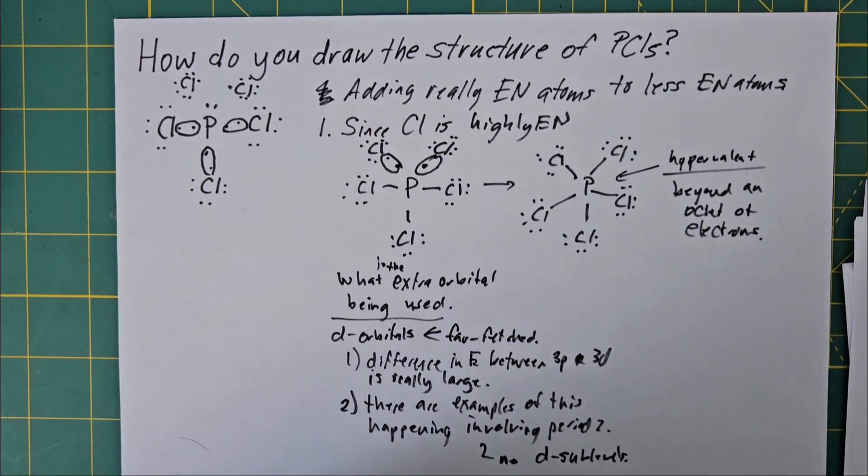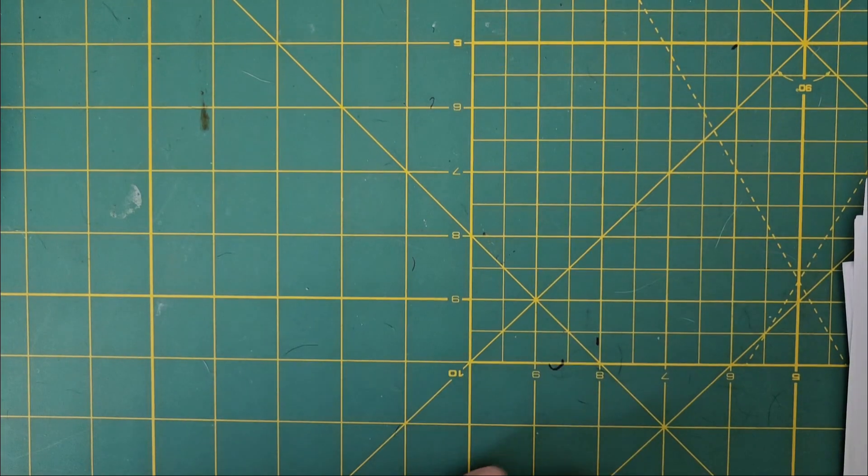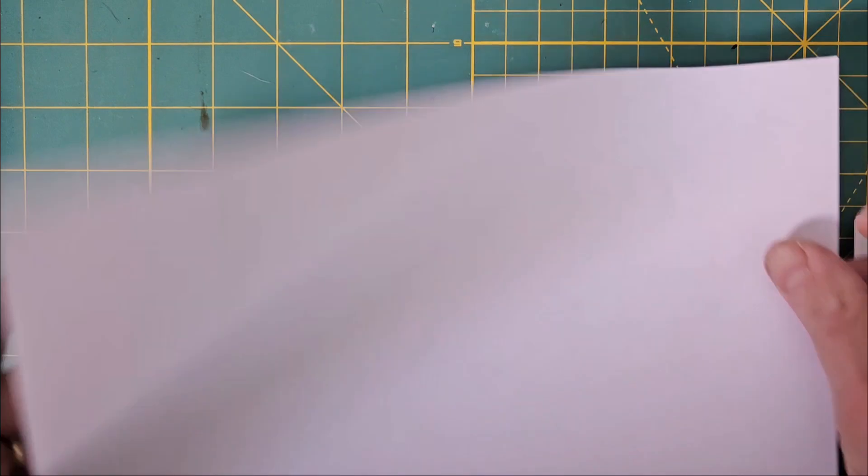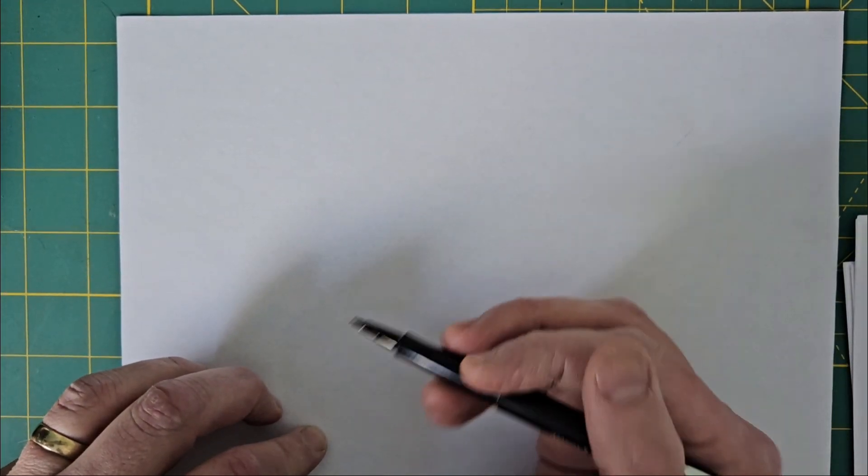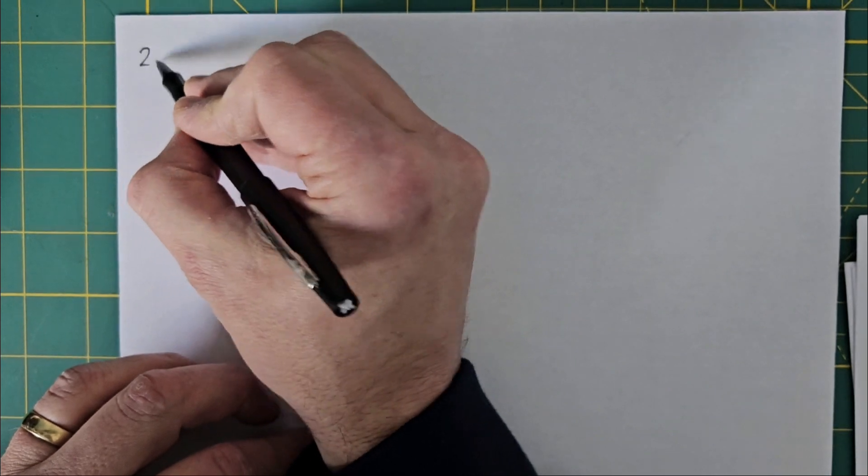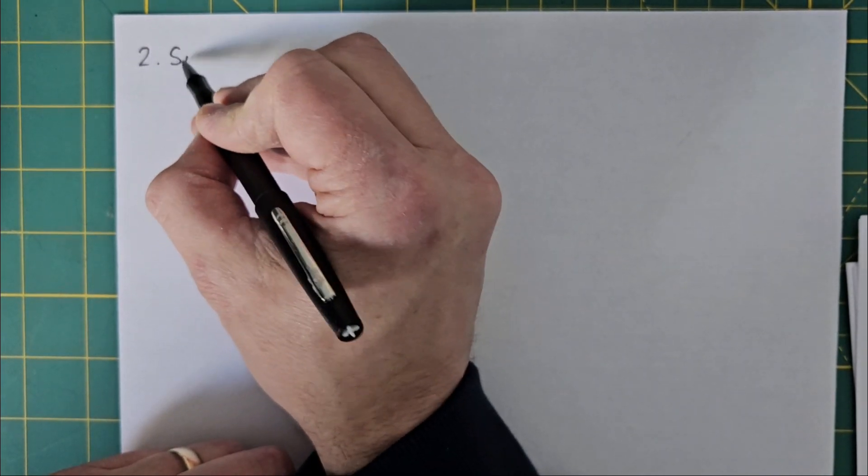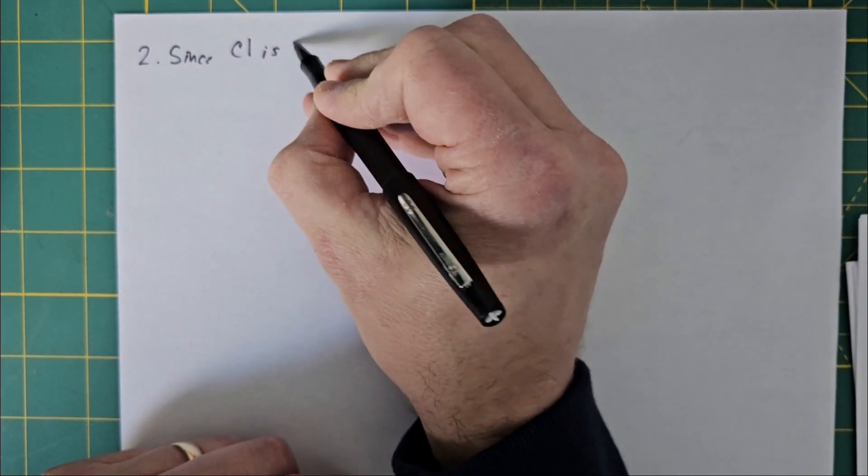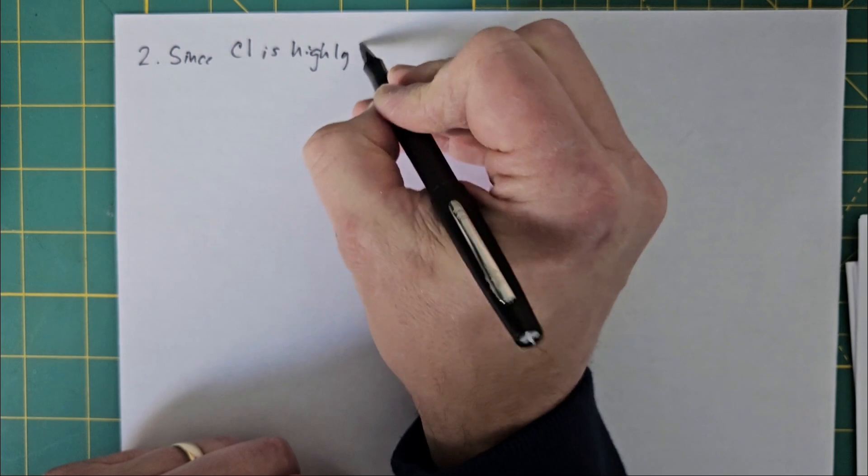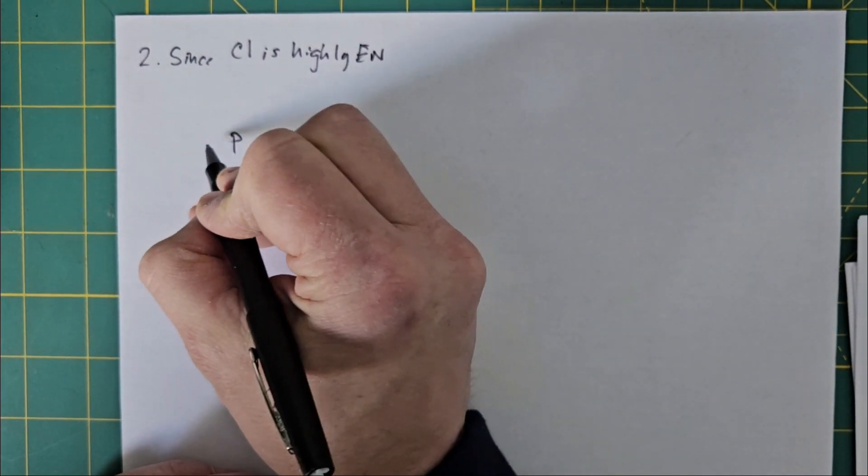So let's look at another possible explanation. And the second explanation starts the same way. Since chlorine is highly electronegative, more so than phosphorus, what's going to happen is this.